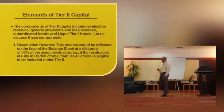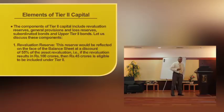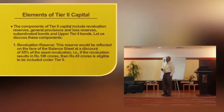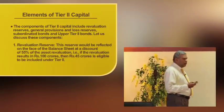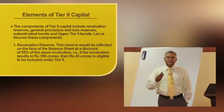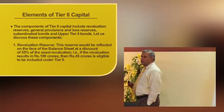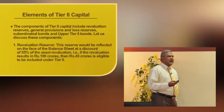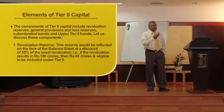Tier-2 capital is limited to a maximum of 100% of total Tier-1 capital. RBI stipulated that out of the 9% CRAR, the contribution of Tier-1 capital should not fall below 6%. Now let us move on to the components of Tier-2 capital. The first item of Tier-2 capital is revaluation reserves. For this, the bank should have an asset — a property, premises, or building — which has appreciated in value. Through a board resolution, to the extent of appreciation at a discount of 55%, they can create a revaluation reserve.